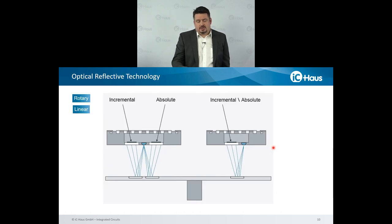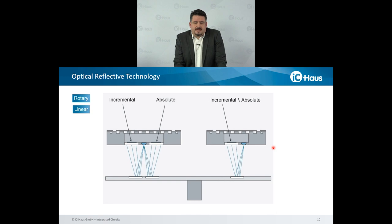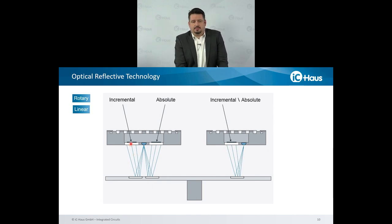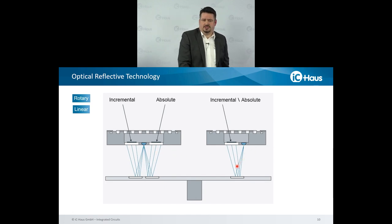I'd like to also point out the optical reflective technology that IC House uses. As you can see here as a cross-section of the sensor and the module, the sensors are lead frame based. Inside we have the CMOS integrated circuits, there is the light source, and then we have — depending on if it's a pure incremental one-track scanning principle, or on the left side — the two-scanning principle. That means we scan with one photodiode array the incremental track, and with the other one we scan the absolute. This works also with just single track for the incremental ones, or the absolute where we just have an absolute code with a one-track design.